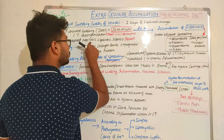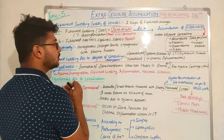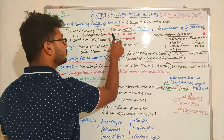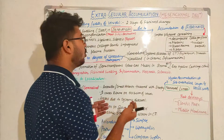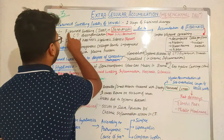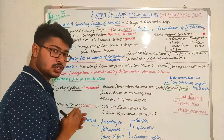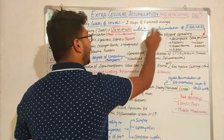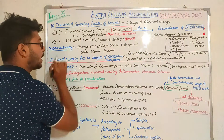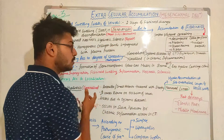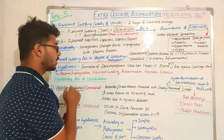Fibrinoid necrosis can further cause hyalinosis and sclerosis, resulting in irreversible cell injury — meaning the cell cannot revert back to its normal state. Fibrinoid swelling involves destruction of the main substance of the connective tissue through fibrinoid accumulation. Microscopically, homogeneous collagen bands are present but impregnated with plasma proteins.